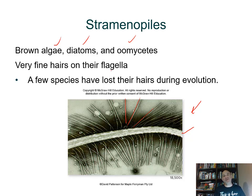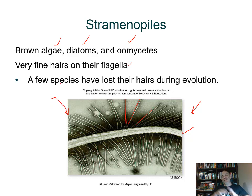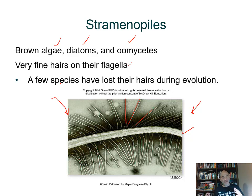Some members in this group don't display those hair-like structures anymore — this would be interpreted as an evolutionary reversal. Because they share so many other characteristics, they're grouped together. Why might some lack the hair-like structures on their flagella? Through evolution, you can lose structures — just like whales and snakes lost their appendages.